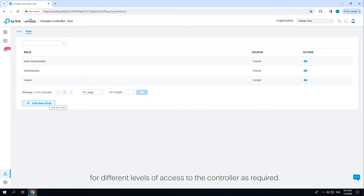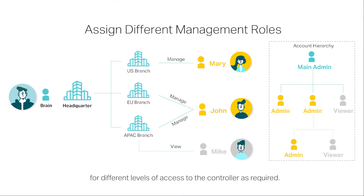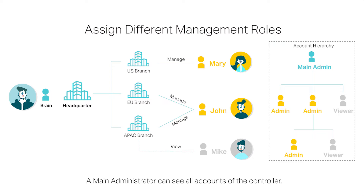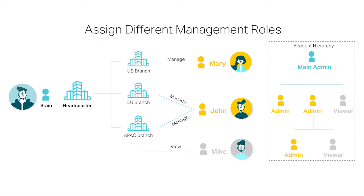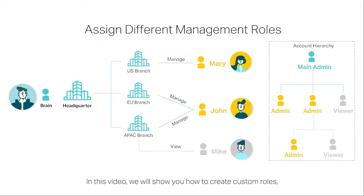Multi-level administrative accounts present a hierarchy of permissions for different levels of access to the controller as required. A main administrator can see all accounts of the controller with user manager permissions. An administrator can see itself and its created accounts and sub-accounts. Since the controller can be accessed both locally and via cloud access, users can be further grouped into local users and cloud users. In this video, we will show you how to create custom roles, local user accounts, and cloud user accounts of different levels.